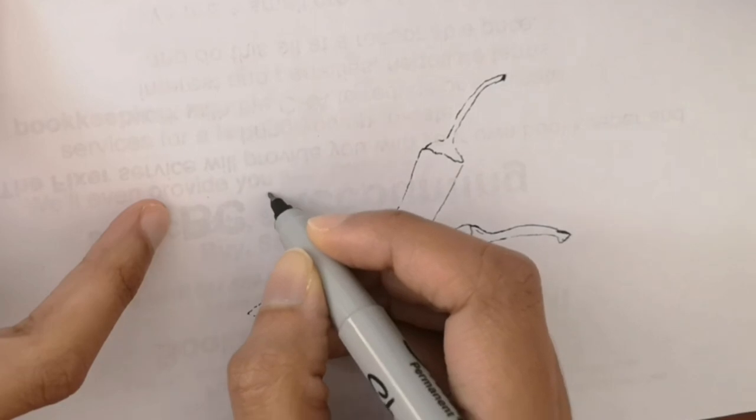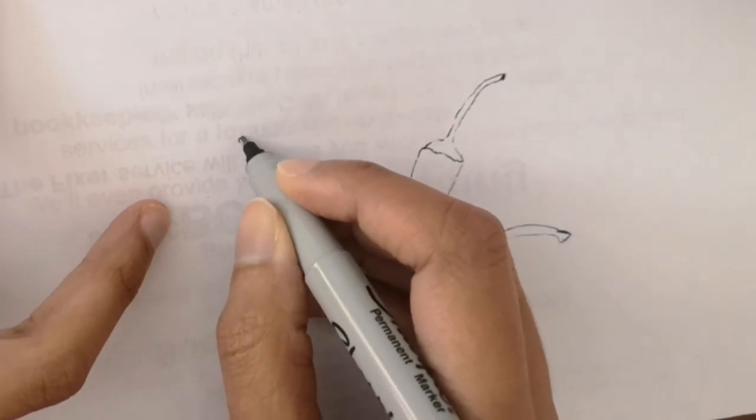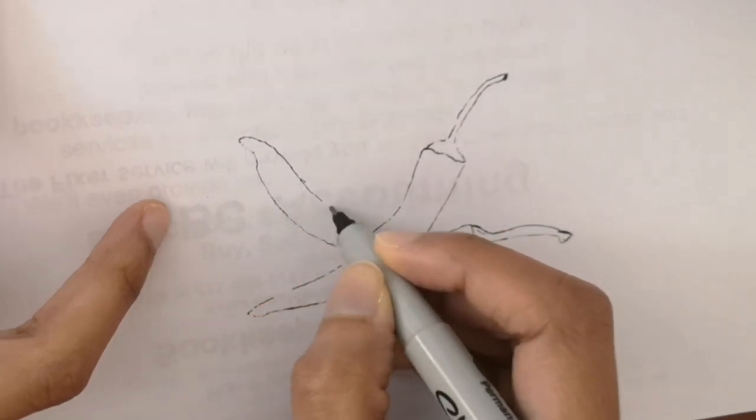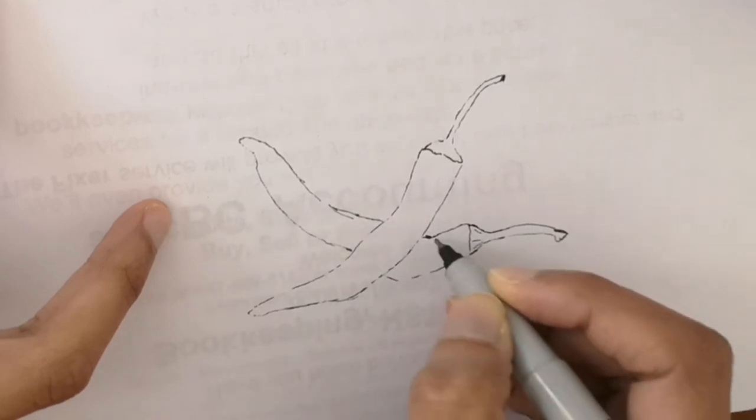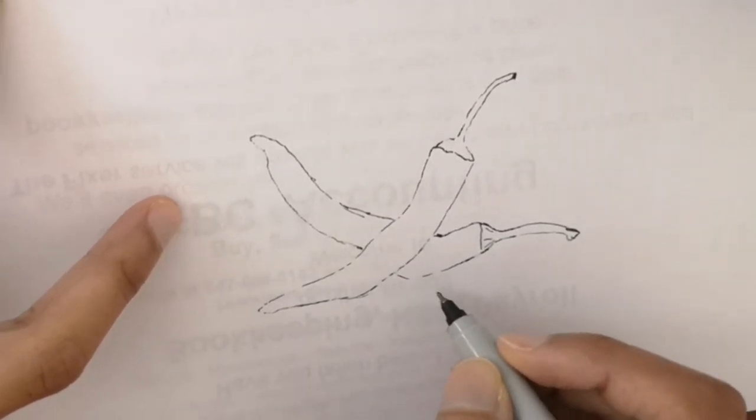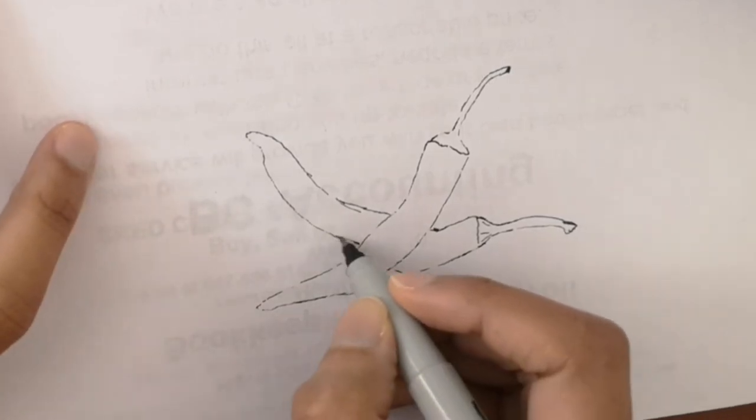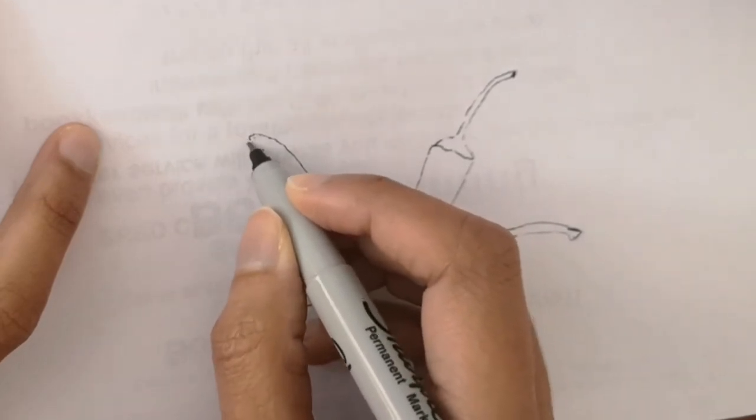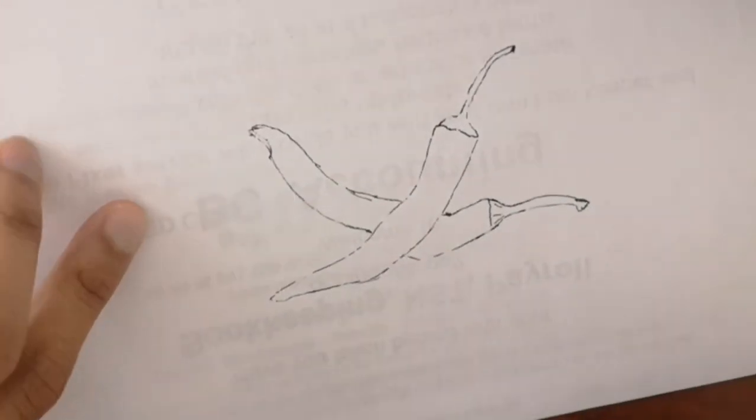You see that I already drew the first chili pepper and I'm going to draw the second one now and I'll finish it off with one more. Then we'll go into coloring. There are so many kinds of chili peppers, thousands of types of peppers around the world.